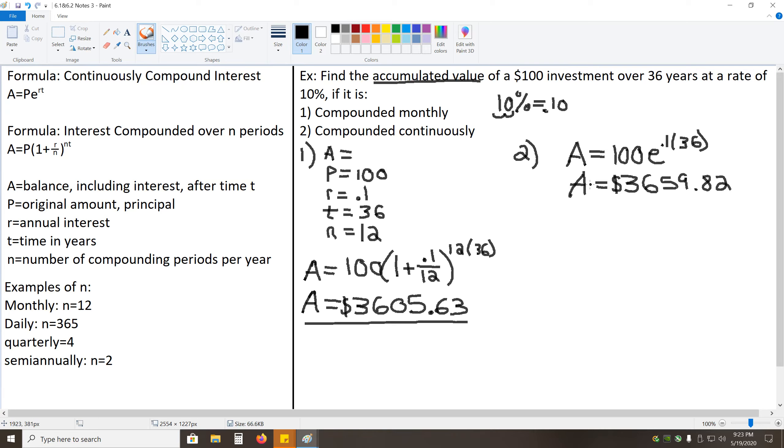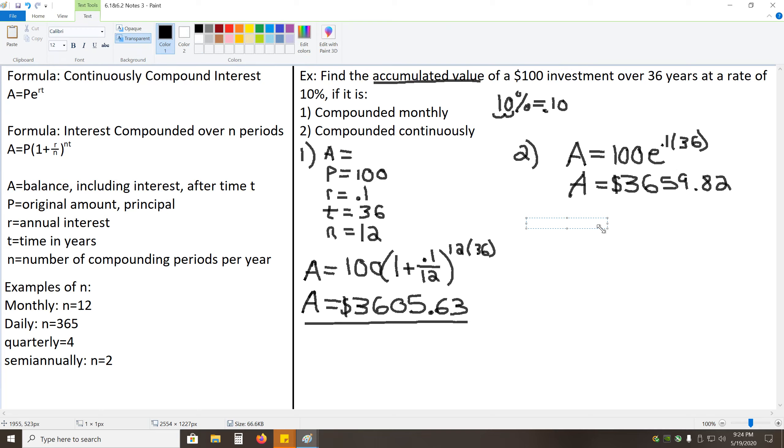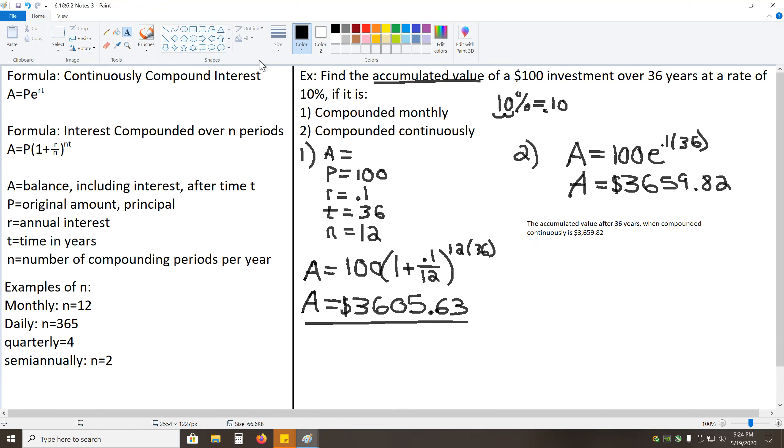So, for this one, I apologize if the typing is a bit loud, but I do want to go ahead and write out a sentence answer just to give a decent idea of what this should look like. So, we would say the accumulated value after 36 years, when compounded continuously is $3,659.82. And that would be the answer that we would want to circle for our final answer.